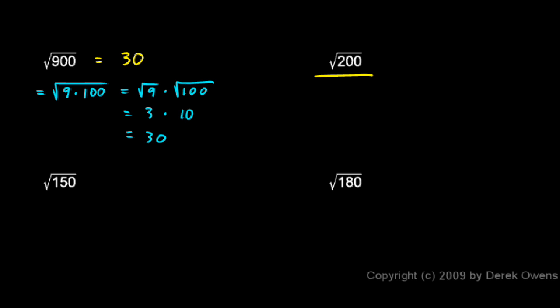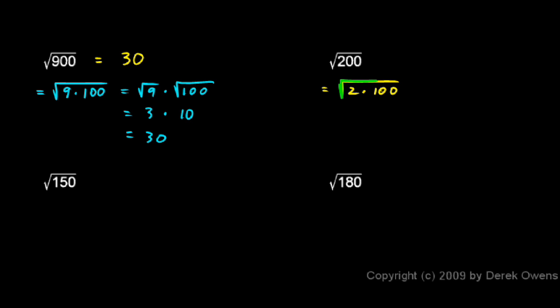In this next example, the square root of 200 — I can rewrite that as the square root of 2 times 100. Any perfect square factors you find under the radical can and should be brought out of the radical. When this 100 pops out from under the radical, it becomes a 10, because the square root of 100 is 10. So instead of the 100 under the radical, I can just make it a 10, and I still have my 2 under the radical. So 10 times the square root of 2 — that's my answer.